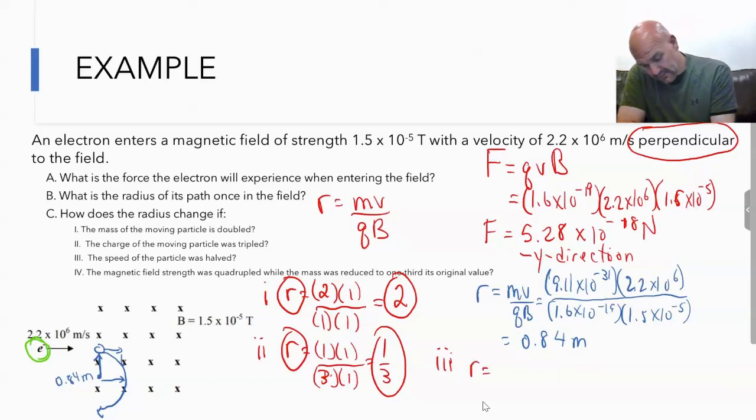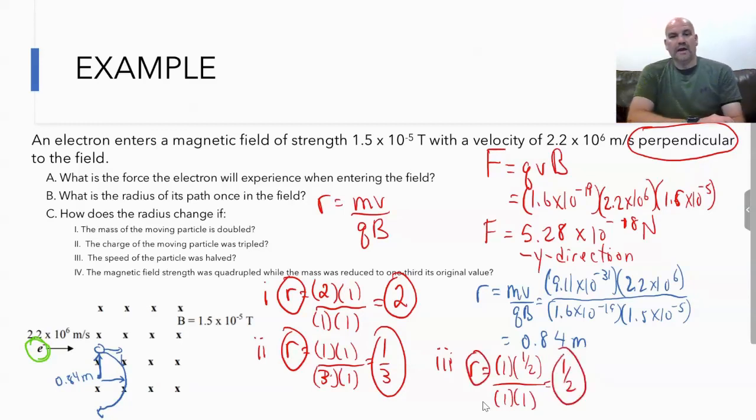Finally, two more. The speed: if we were to halve the speed, that's one-half the speed, q is one, and B is one. What would happen to our radius? It'd be one-half of our original value.